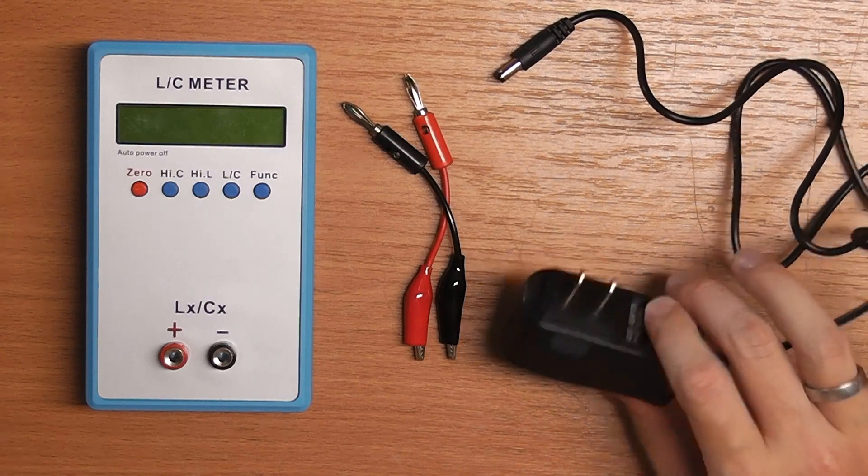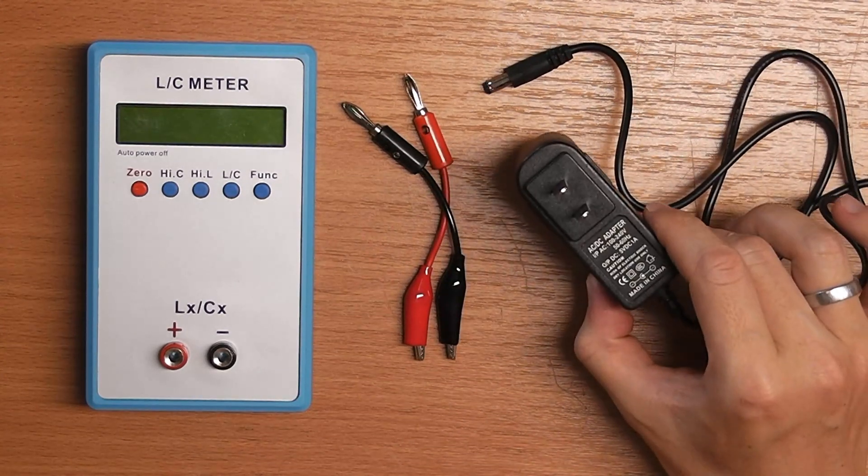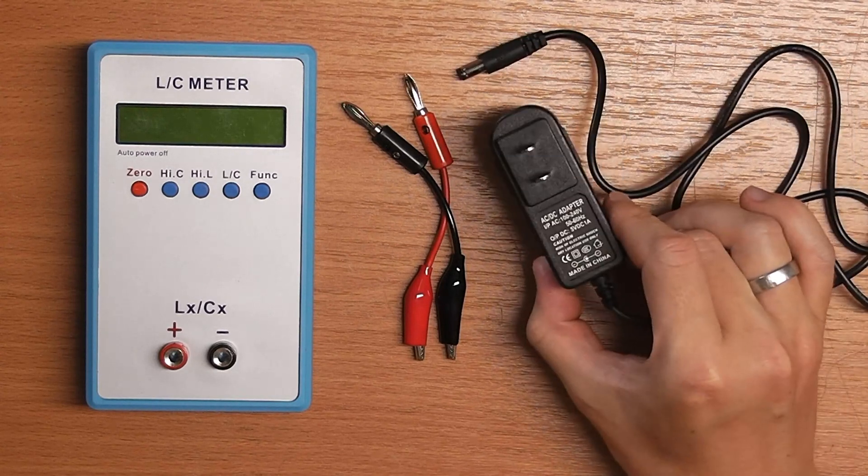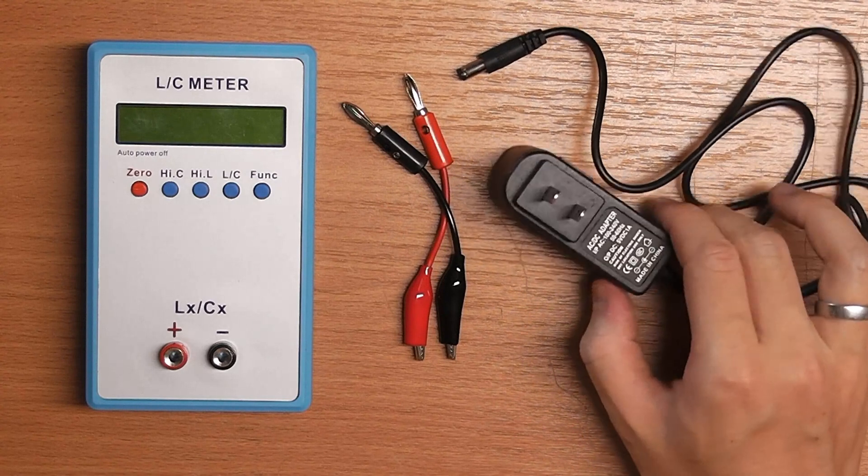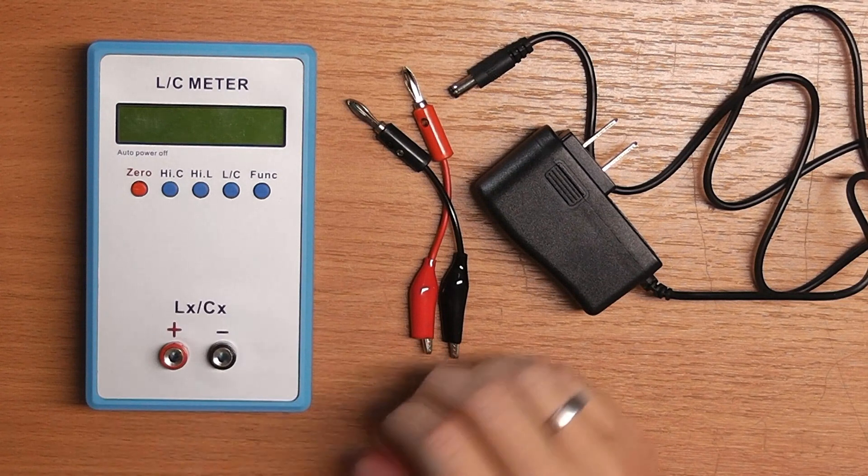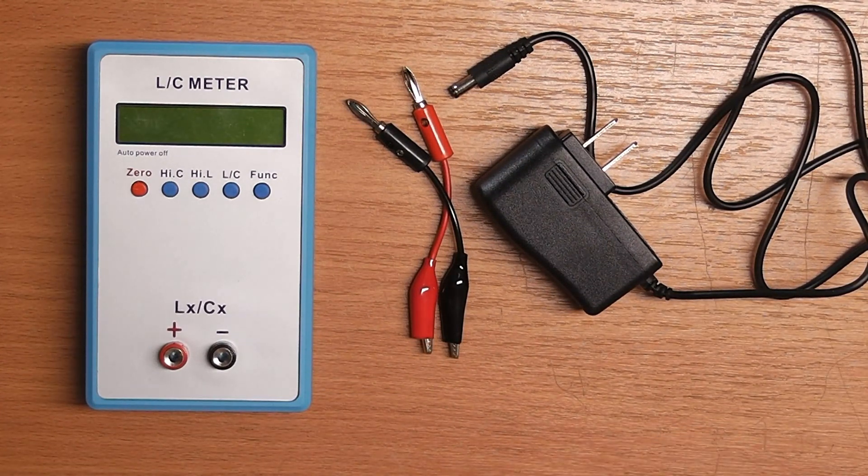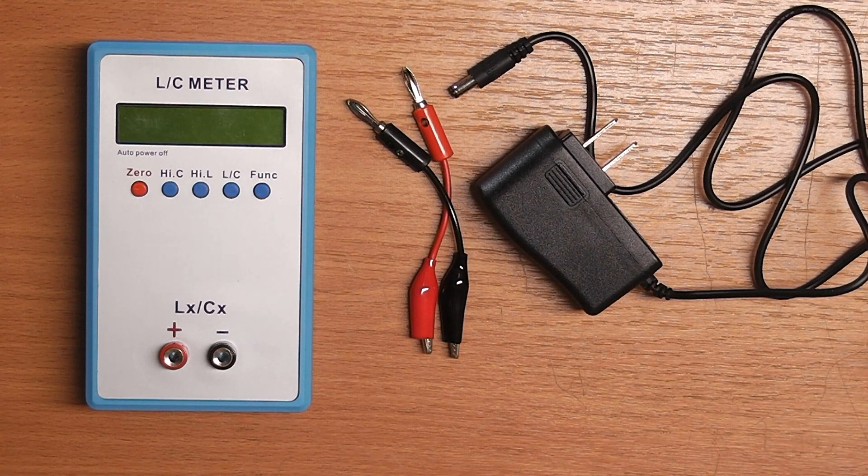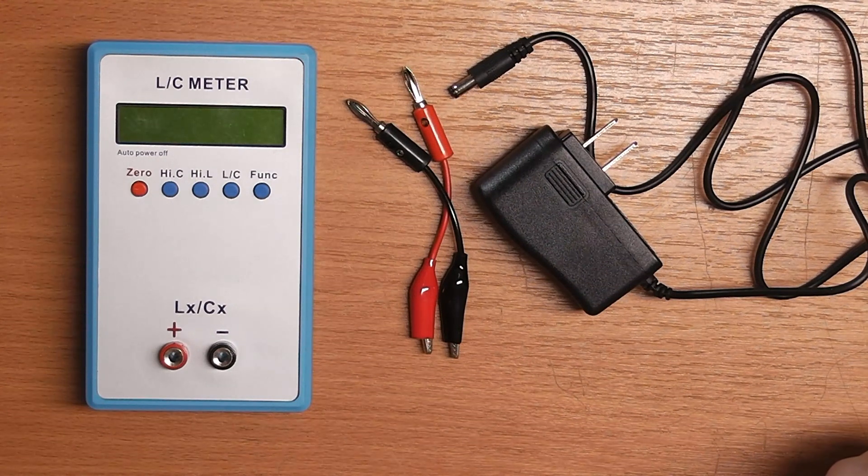First, the supplies that came with it is an AC-DC adapter. It outputs 5 volts DC at 1 amp. It has a US American style socket here, some crocodile clips and the meter. There was supposed to be a SMD tweezer in the package, but it just wasn't shipped apparently. So I've contacted the seller and I'm going to get that, I hope.